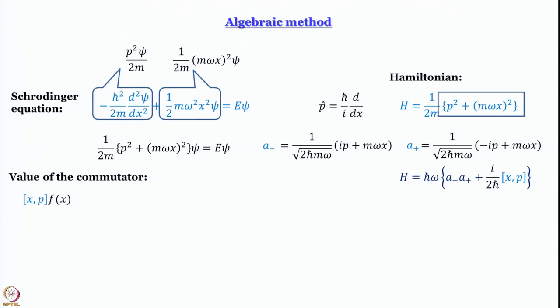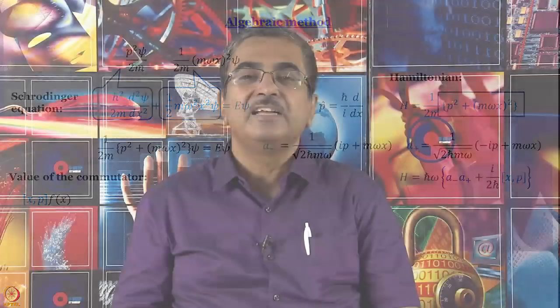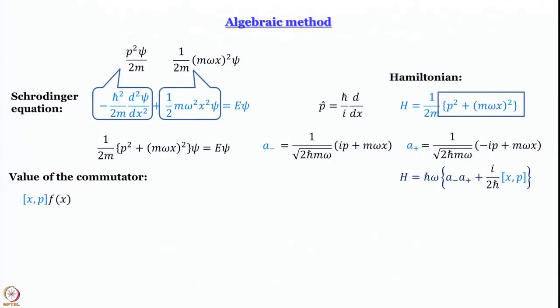We must remember that operators must act on some function. To work out [x, p] we let it act on a general function f(x), and we use the momentum operator p = (ℏ/i)·d/dx.